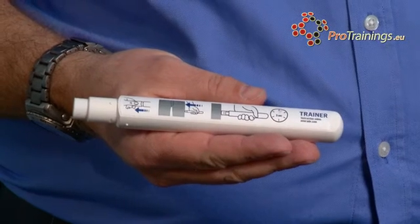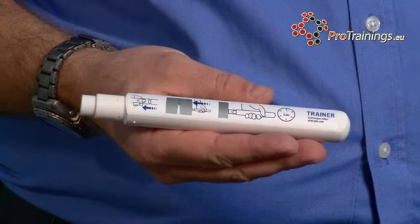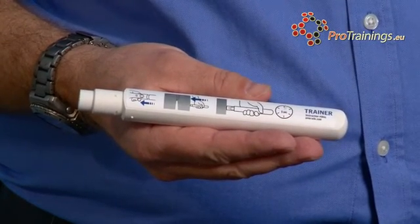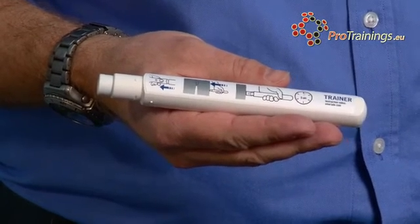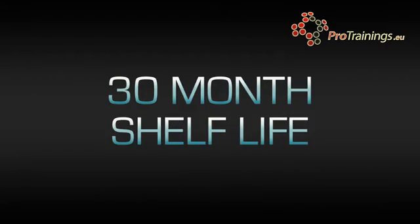The features of this unit are that it has a longer needle to ensure the drug is delivered in the correct place. It offers a higher dose with units of 150, 300, and 500 micrograms. It also reduces costs with a longer shelf life of 30 months.